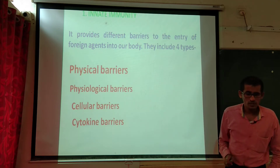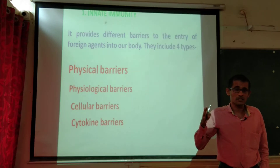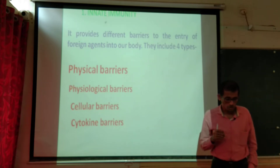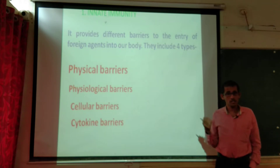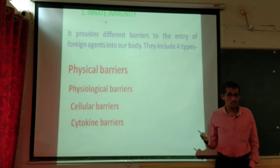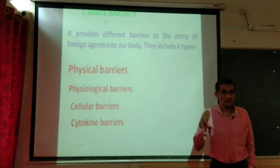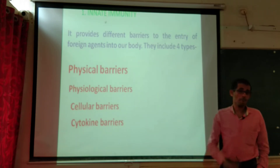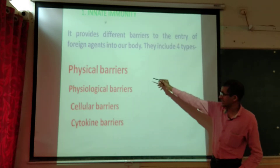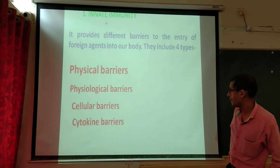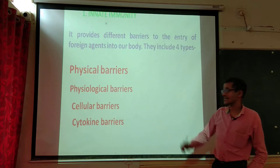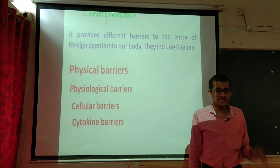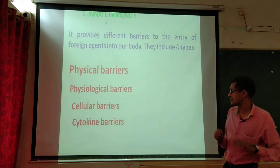Innate immunity provides different barriers — a gate system — for the entry of foreign agents into our body. These pathways are blocked in the first line of defense by innate immunity. There are four types of barriers: physical barrier, physiological barrier, cellular barrier, and cytokine barrier.